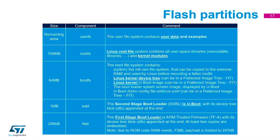The second stage bootloader sits in external memory — size is less of a constraint, typically around one megabyte — and it also has its own device tree blob for configuring peripherals needed to load the kernel, for example via Ethernet. The boot file system contains the kernel, device tree, information for mounting the root filesystem, loading splash screen images, and similar items. The Linux root file system contains all executables, libraries, and kernel modules.